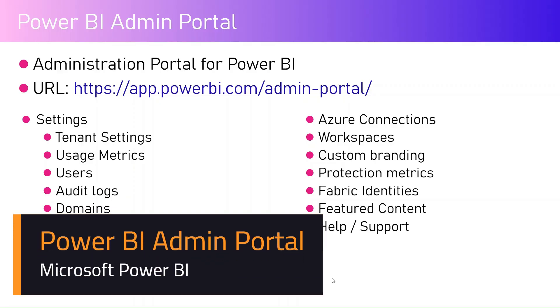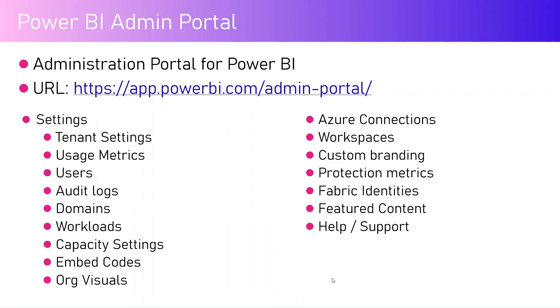In this video, I'm going to talk about the Power BI admin portal and where all the settings are stored from an administration perspective. In order to access the admin portal, you need to navigate to app.powerbi.com, click on the settings icon, and navigate to the admin portal. The options you can configure include tenant settings, usage metrics, user management, audit logs, domains, workloads, capacity settings, embed codes for published reports, internet domain, org visuals, and Azure connections.